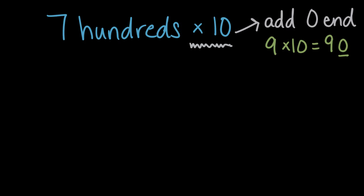So let's use that pattern first to try to solve. Here we have seven hundreds, so seven times we have a hundred, or seven hundred, and we're multiplying again times 10. Using this pattern over here, our solution will add a zero at the end. So if we had seven hundred ten times, we would have seven hundred with a zero on the end, or seven thousand. So seven hundreds times 10 is equal to seven thousand.